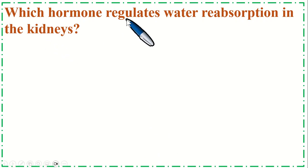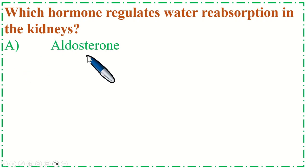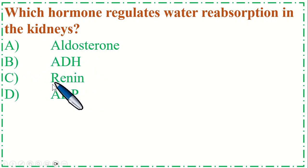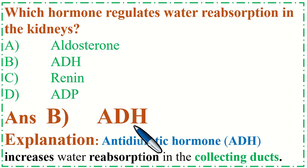Which hormone regulates water reabsorption in the kidneys? Option A: Aldosterone, B: ADH, C: Renin, and Option D: ADP. The correct option is B, ADH — Antidiuretic hormone. Antidiuretic hormone (ADH) increases water reabsorption in the collecting duct.